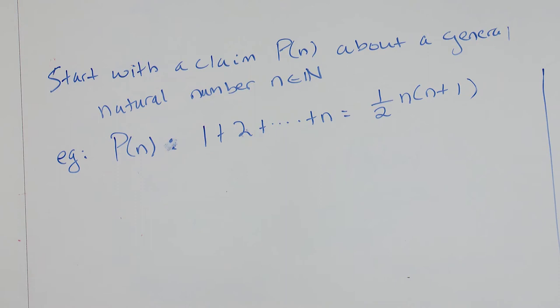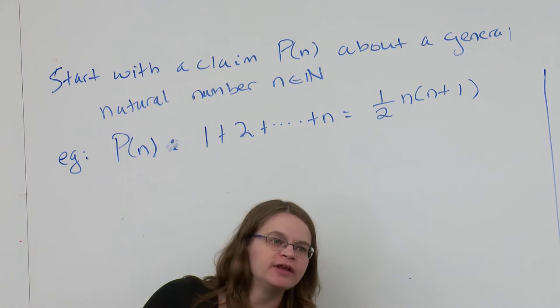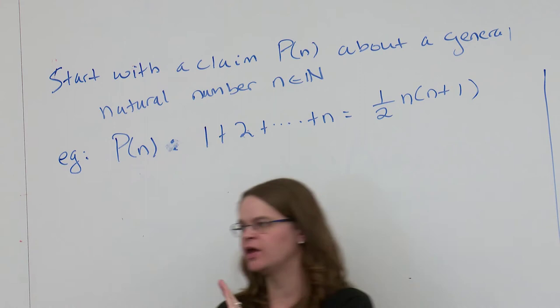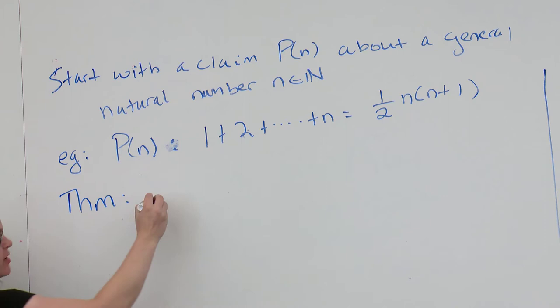The idea of mathematical induction is like dominoes. We start by showing P(1) is true — that's the first domino. Then we show that if it works for n = k, it also works for the next value, n = k+1. So if it works for n = 1, it automatically works for n = 2; if it works for n = 2, it works for n = 3; and so on. As long as we can knock down the first domino, this will work.